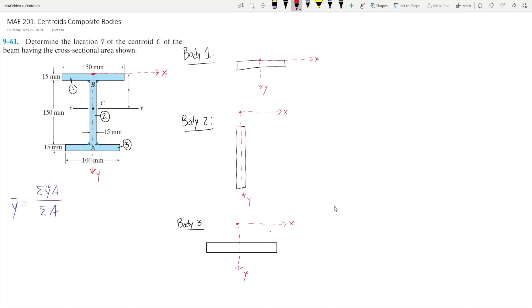What we're going to do here is find the centroid of each of these three individual geometries in order to find the centroid of the composite body. One thing I like to do is draw out a table. I like to store my values in the table because it makes it easier to keep track of our y-tildes and our areas for each shape.